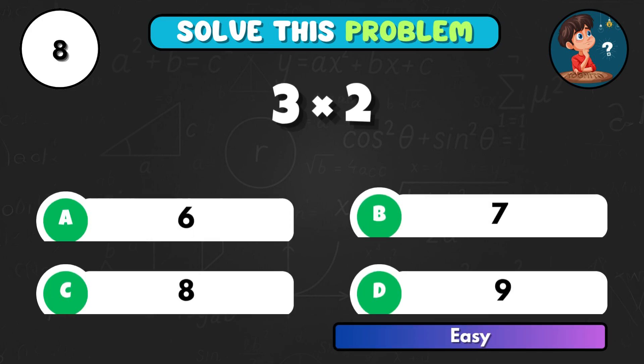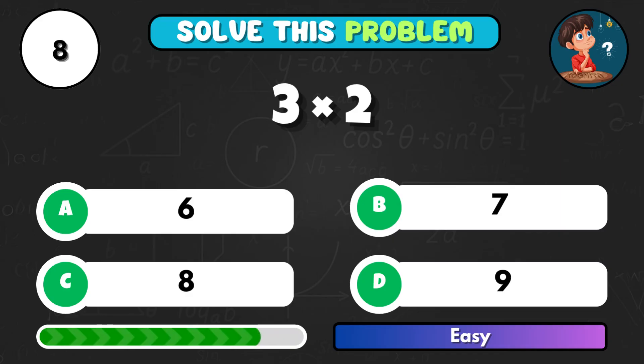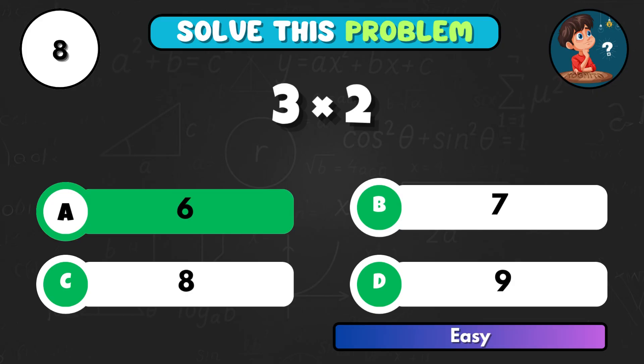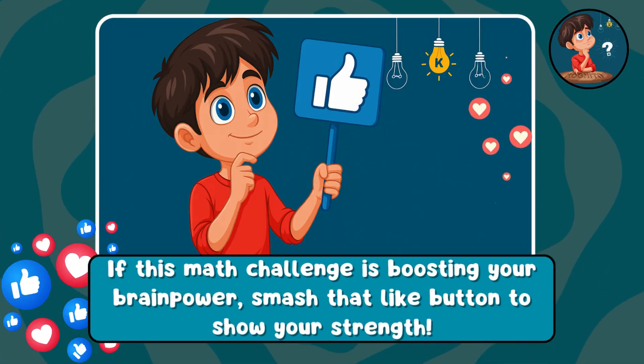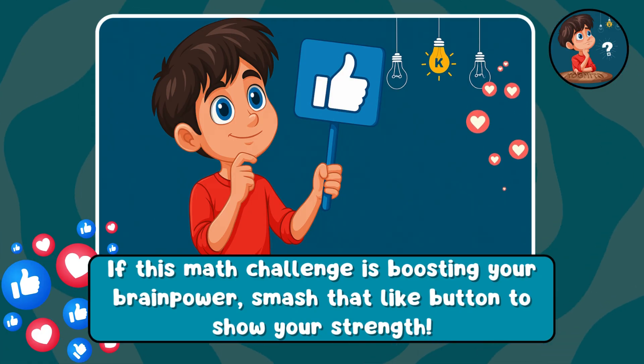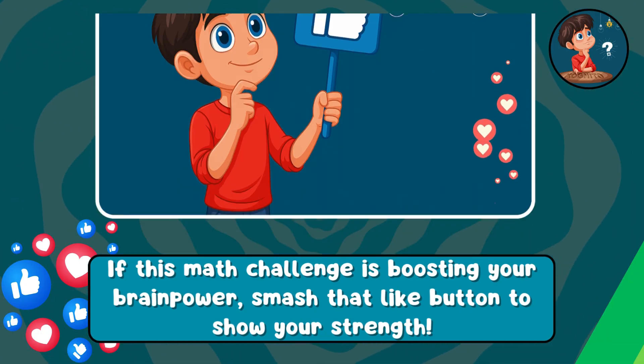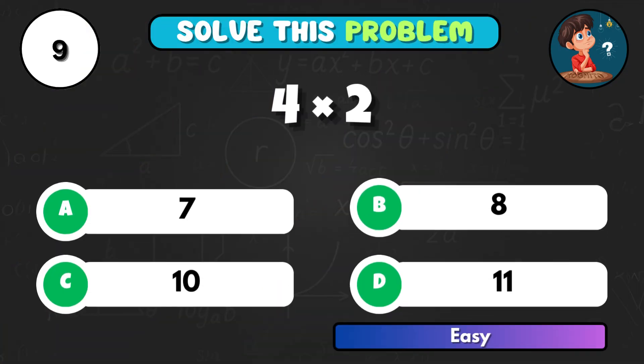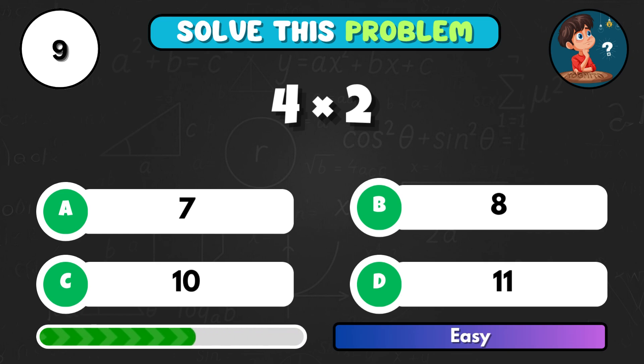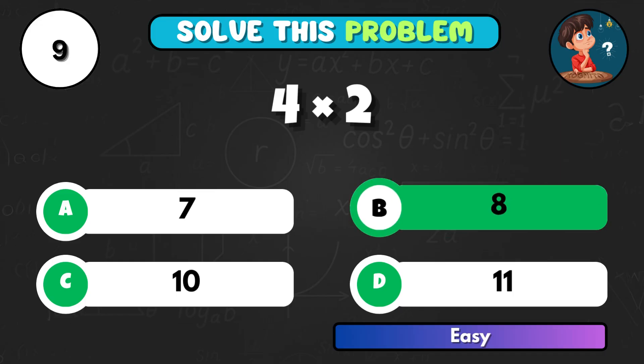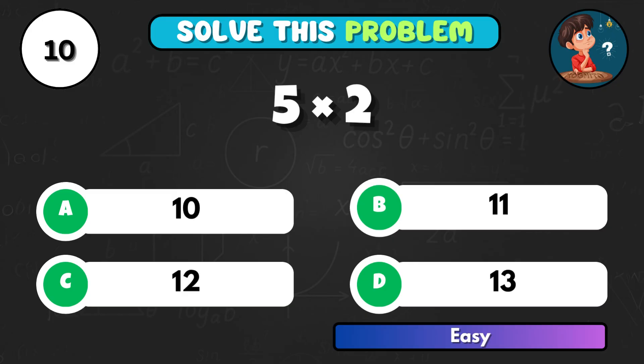3 times 2 and think quick. That's A equal to 6. If this math challenge is boosting your brain power, smash that like button and show your strength. 4 times 2, what's 4 times 2? Option B and the answer is 8. 5 multiplied by 2, what does that give? Correct answer A, that's 10.